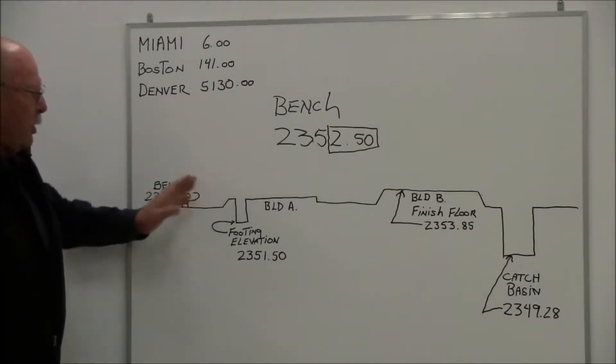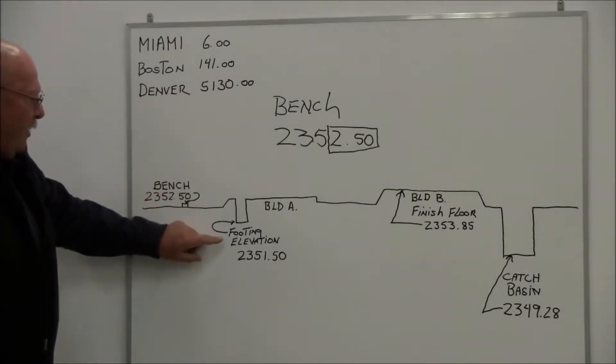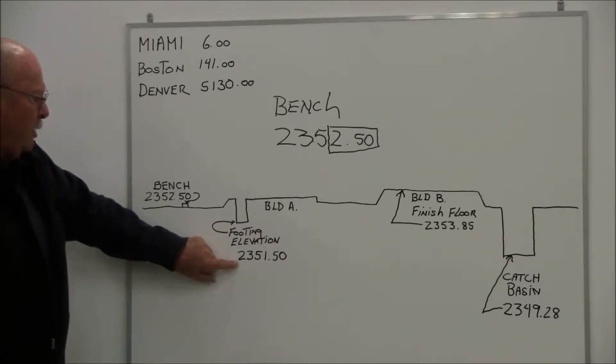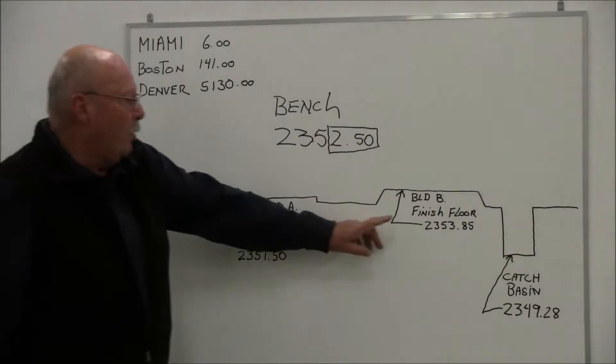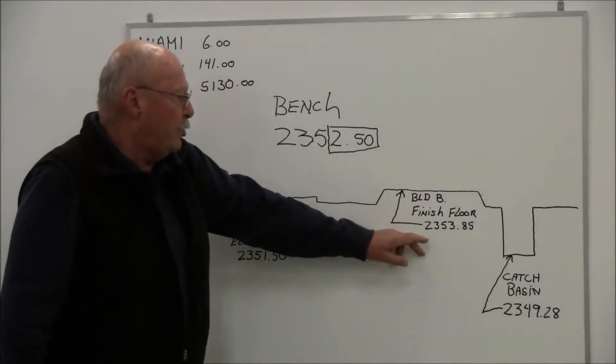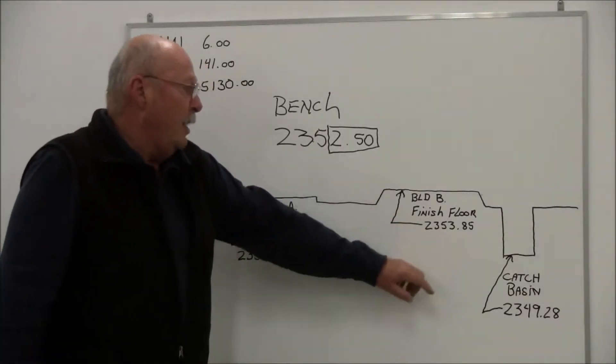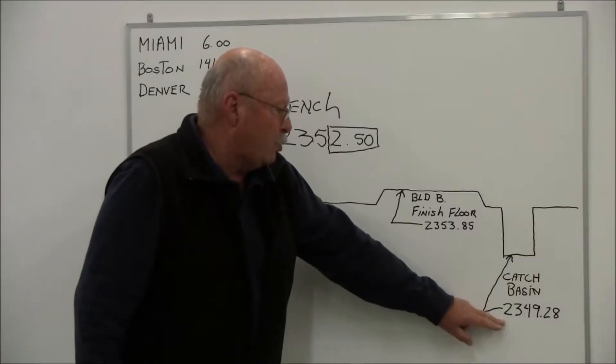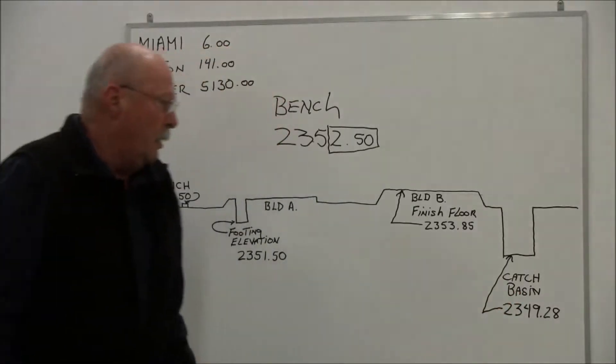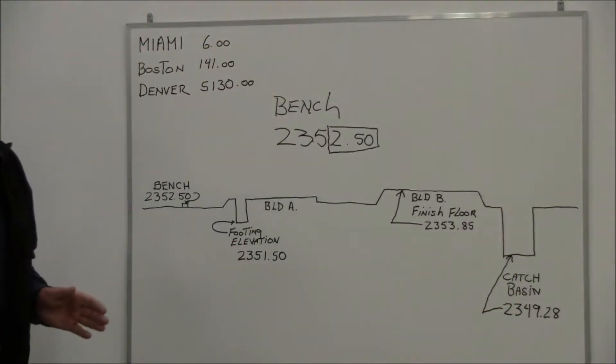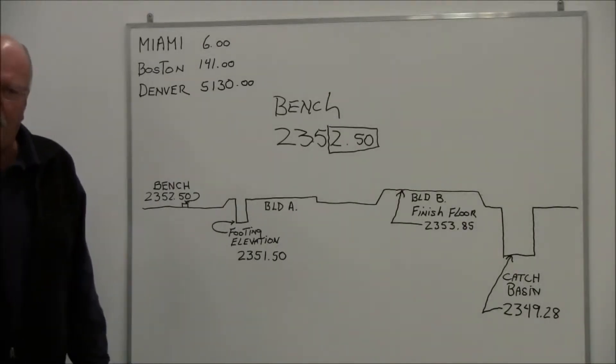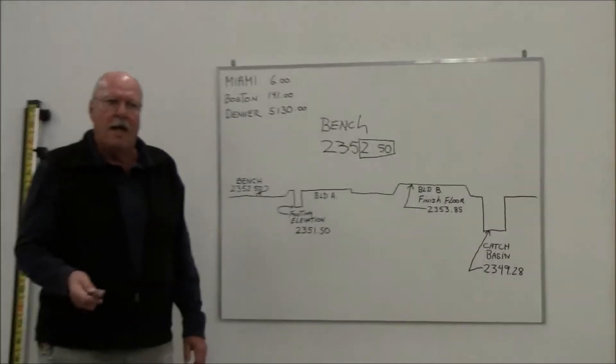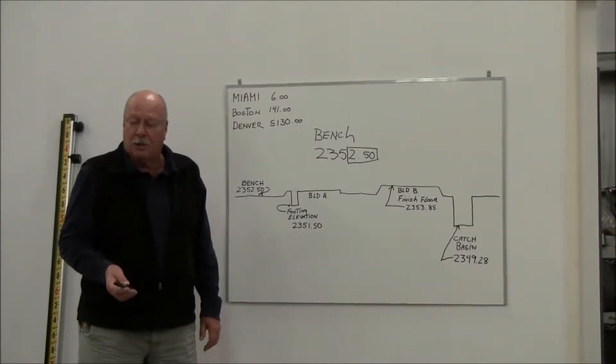What we're really going to be looking at is 2.50 on our grade rod, which is going to represent 2,352.50. So for example, on this particular illustration, if I have a footing elevation, it might be depicted as 2,351.50. I might have a building finished floor at 2,353.85. And in this case, I've got a catch basin of 2,349.28. So what's nice, what we're going to do is we're going to show you how the direct reading rod works and how simple it is.